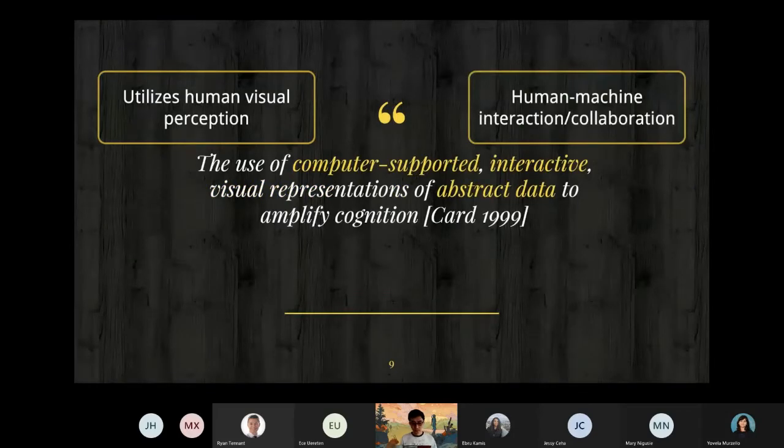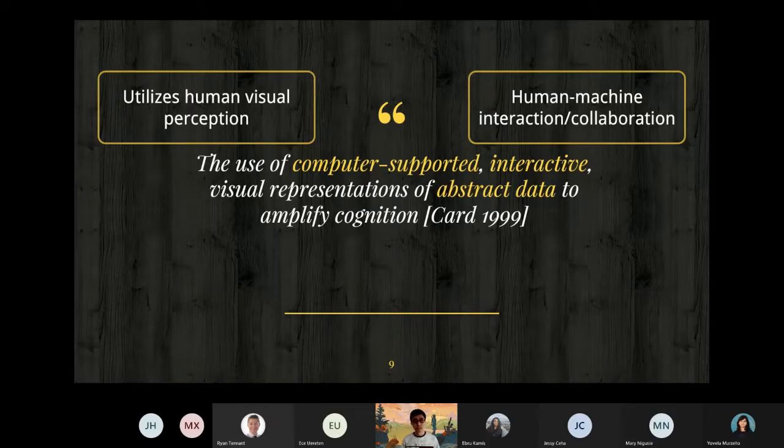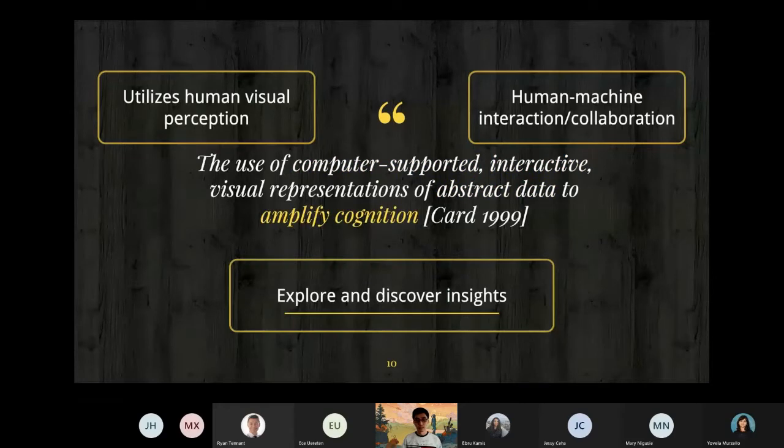The second point is human-machine interaction and collaboration. You see in the definition computer-supported interactive and abstract data. Together, InfoVis is the bridge between human and the machine. Human and machine should collaborate together to explore data. That is the ultimate goal.